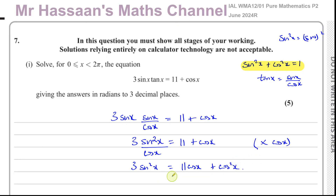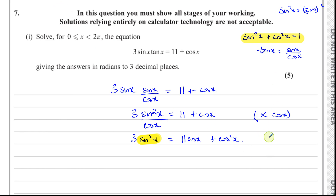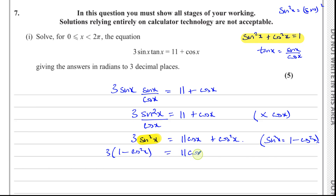The cosine x term is difficult to change, and everything else is already in terms of cosine x. So what we want to change is sine squared x — that will make everything in terms of cosines. I'm going to replace sine squared x with one minus cosine squared x, since sine squared x equals one minus cosine squared x. So three times (one minus cosine squared x) equals 11 cosine x plus cosine squared x.